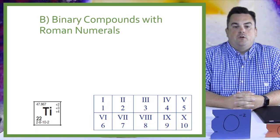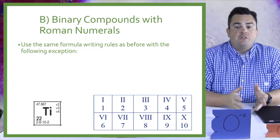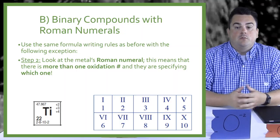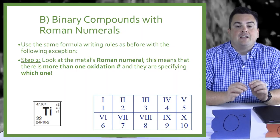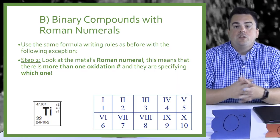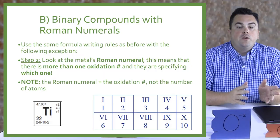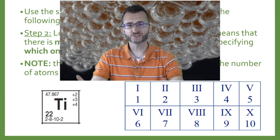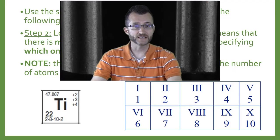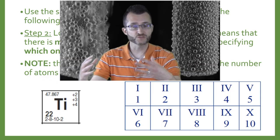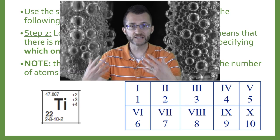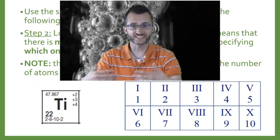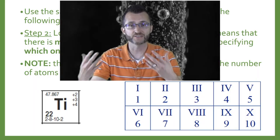Binary compounds with Roman numerals — use the same formula writing rules as before with the following exception. Step two: look at the metal's Roman numeral. This means there is more than one oxidation number and they are specifying which one. Note: the Roman numeral equals the oxidation number, not the number of atoms. When going from name to chemical formula, it's actually really easy — when they give you a Roman numeral, they're giving you the charge. So for example, if you see titanium(II), you know titanium will have a charge of +2.